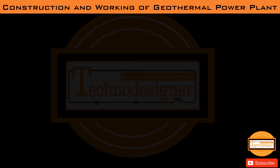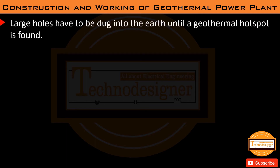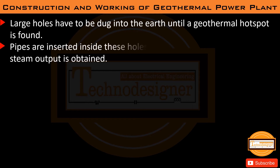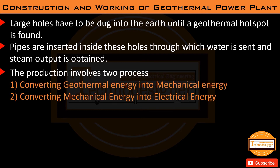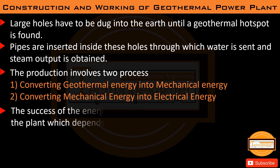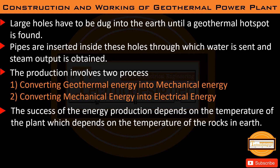For construction of a geothermal plant, large holes are dug into the earth until a geothermal hot spot is found, and pipes are inserted through which water is sent and steam output is obtained. The production involves two processes: converting geothermal energy into mechanical energy, and converting mechanical energy into electrical energy. The success of energy production depends on the temperature of the rocks inside the earth.